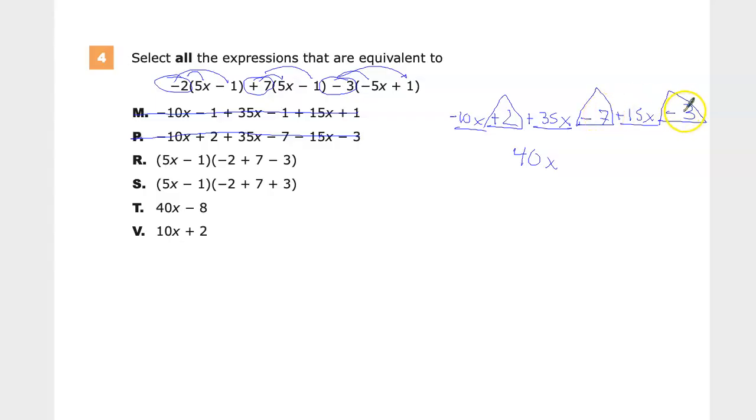2 minus 7 gives me negative 5 and then minus 3 gives me negative 8. Or you could do negative 7 minus 3, which is negative 10, plus 2 gives you negative 8. So 40x minus 8, and that's one of my choices.